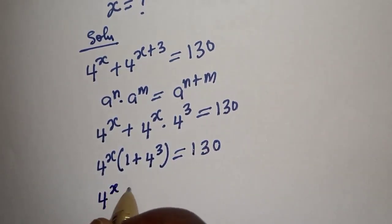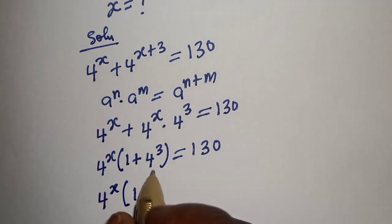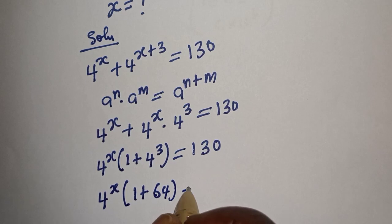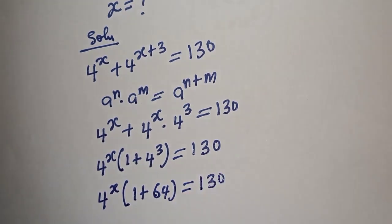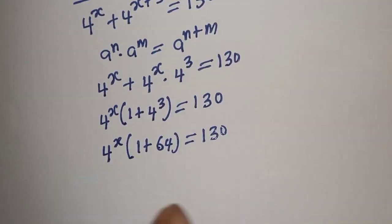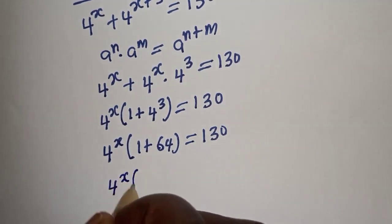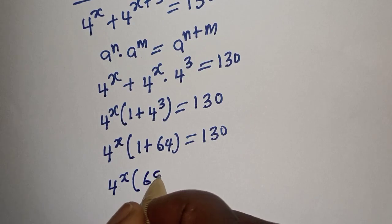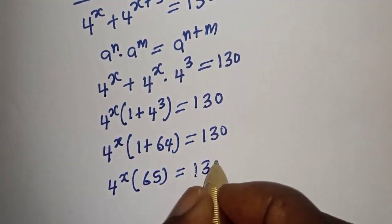Now, 4 raised to power 3 is 64, so we have 4 raised to power s multiplied by bracket 1 plus 64, which gives us 4 raised to power s times 65, is equal to 130.